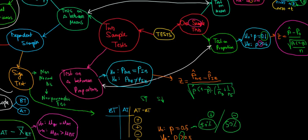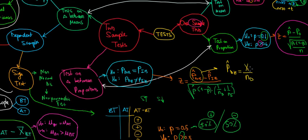Let's understand how to compute the sample proportions. The first sample proportion is the number of Dutch students who ride bicycles divided by the total number of Dutch students in the sample. The second sample proportion is the number of international students who ride bicycles divided by the total number of international students in the sample.